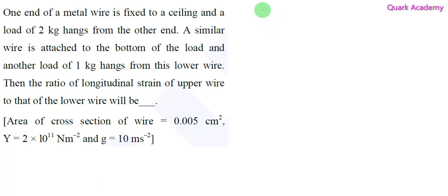In this question, there is a wire that connects to the ceiling and a load of 2 kg hangs from the other end. A similar wire is attached to the bottom of the load and another load of 1 kg hangs from this lower wire.